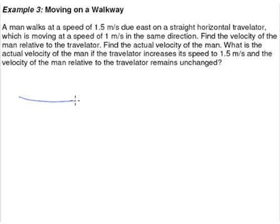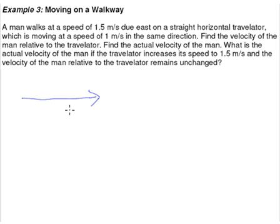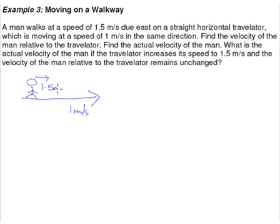The first thing you may want to do is to sketch a diagram — just represent the walkway. The walkway is moving at a speed of 1 meter per second. There's a man on the walkway, and he himself is in some kind of hurry, so he is moving on the walkway at a speed of 1.5 meters per second.